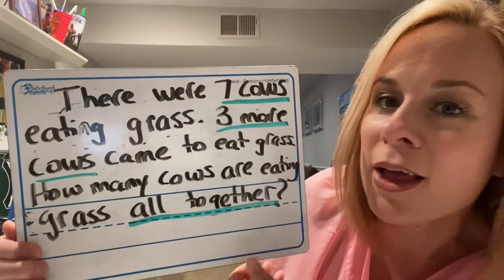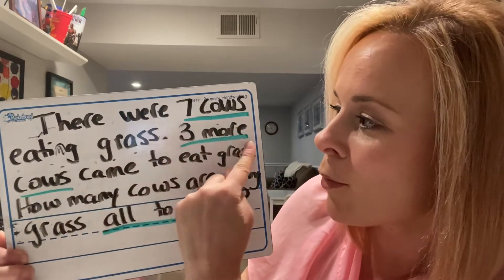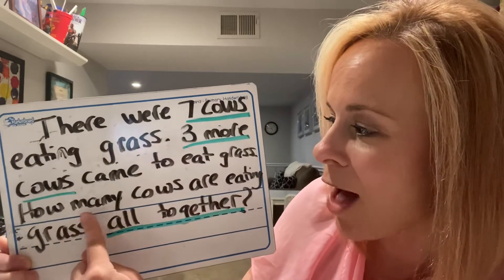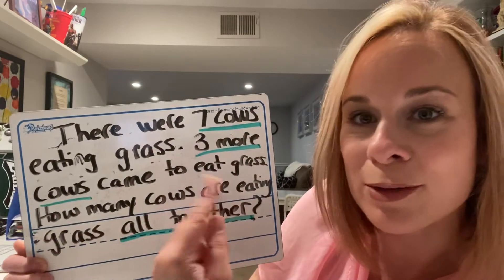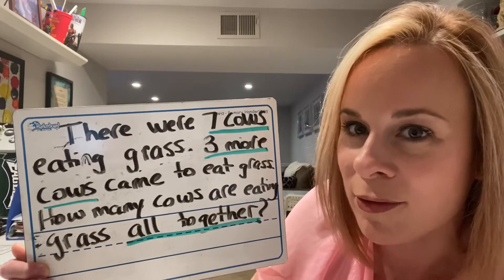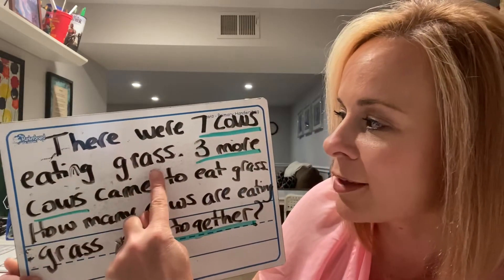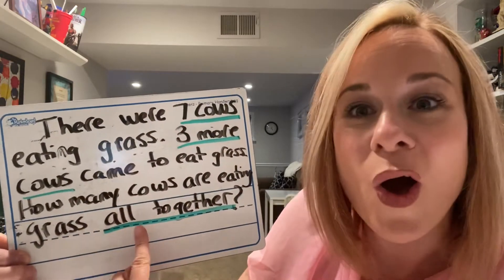The first thing I'm going to do is read this word problem. You're going to see the little green lines marking the most important information that the word problem wants us to find out. I'm going to read it through twice and you're going to try to read along with me. There were seven cows eating grass. Three more cows came to eat grass. How many cows are eating grass all together?